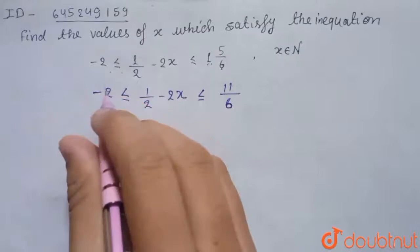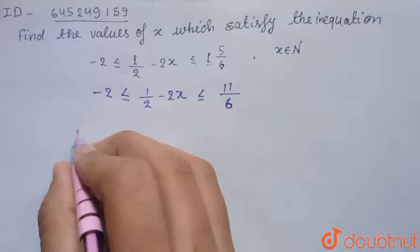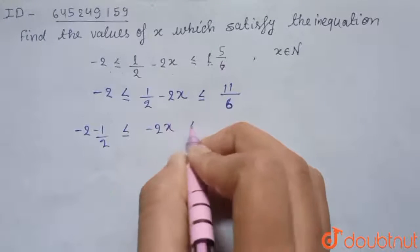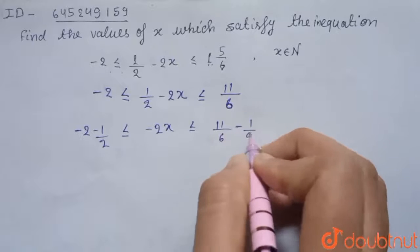Now subtract -1/2 from this equation. So we get -2 - 1/2. This will become -2x ≤ 11/6 - 1/2.